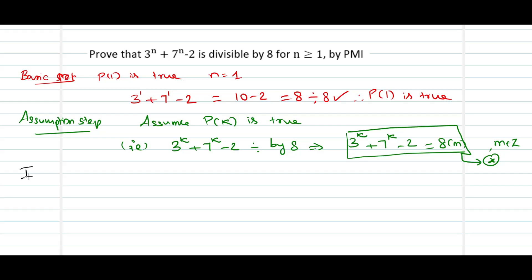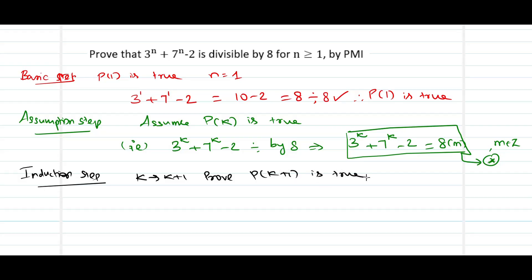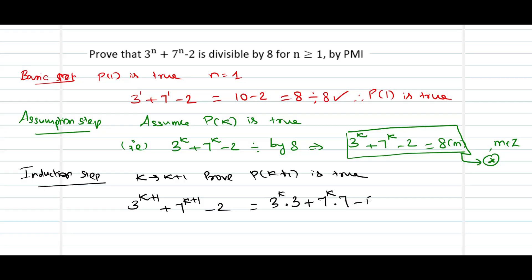The last step is the induction step, where I replace k with k plus 1 and prove that p of k plus 1 is true. When I replace k with k plus 1, I have 3 power k plus 1 plus 7 power k plus 1 minus 2 — this I need to show is divisible by 8. Let me split and write this as 3 power k times 3 plus 7 power k times 7, minus 2.